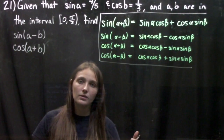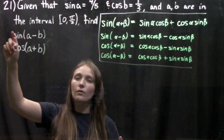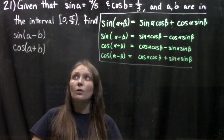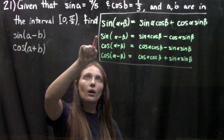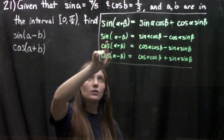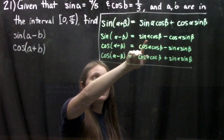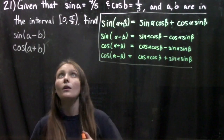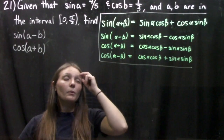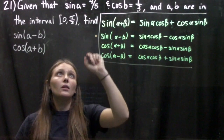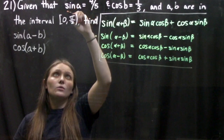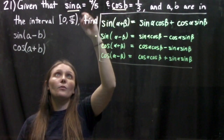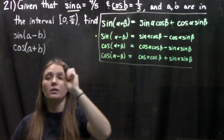There are two portions to this problem — two things we're going to find. First, we're going to find sine of A minus B. We'll look at our difference formula for sine: sine of alpha minus beta equals sine of alpha cosine beta minus cosine alpha sine beta. That's the formula we're going to use. Now we want to draw reference angles in the form of triangles for sine of A and cosine of B.